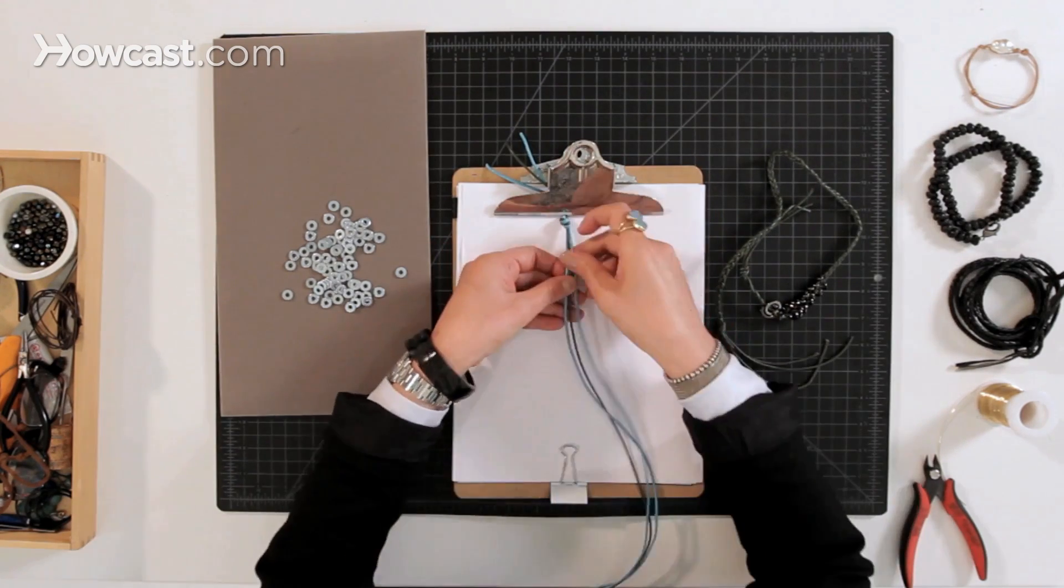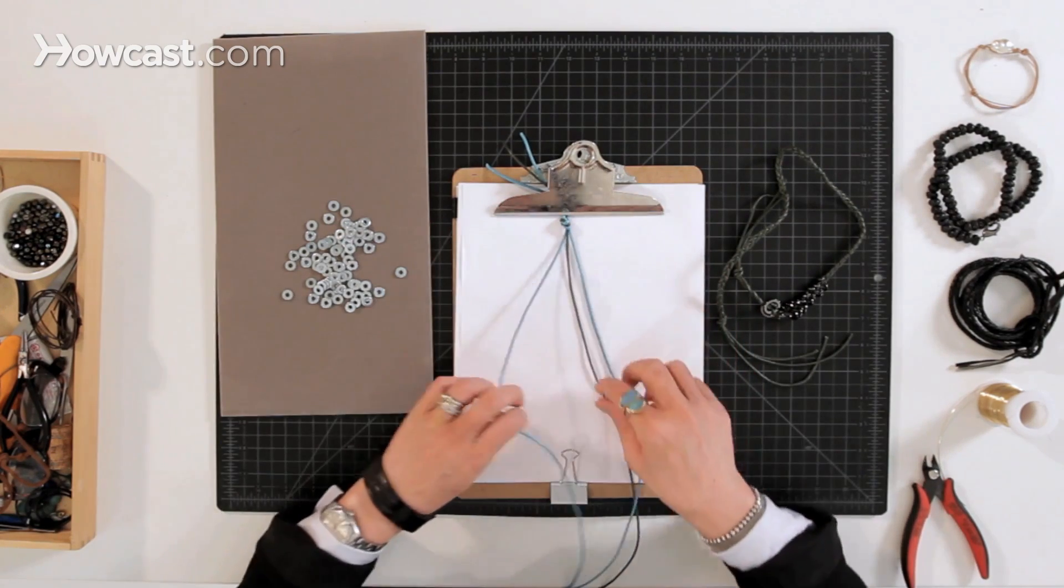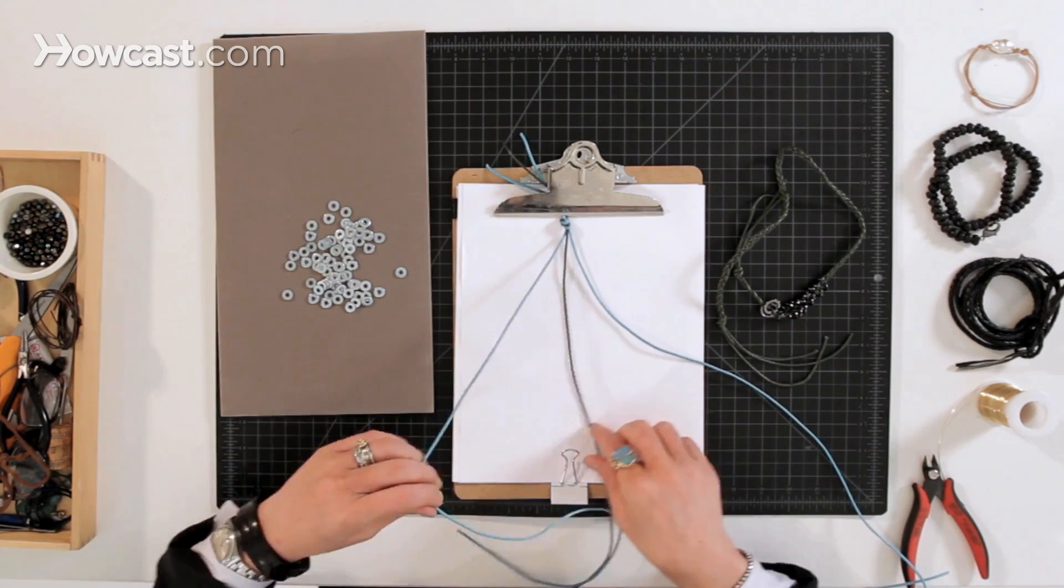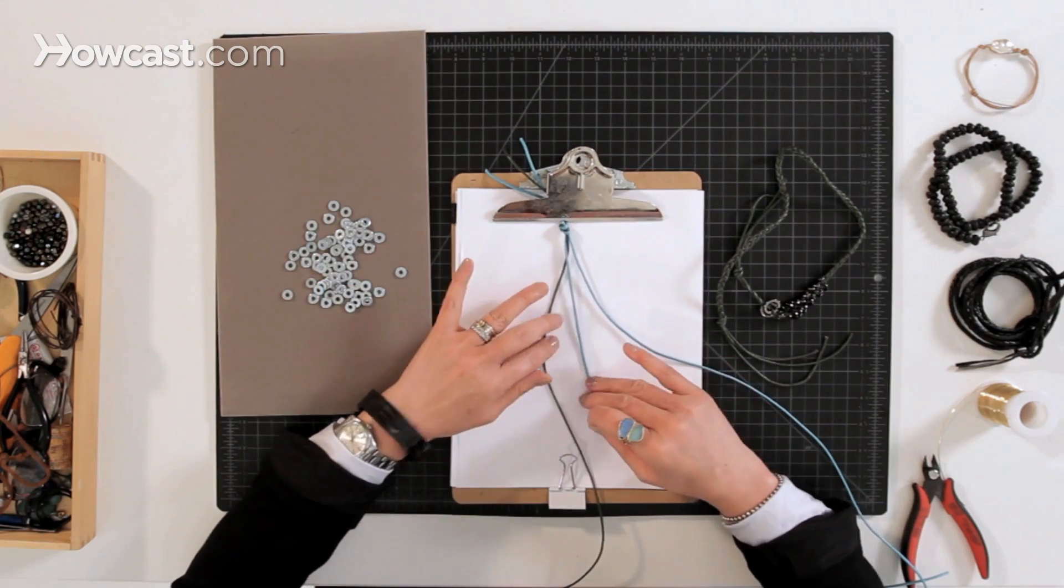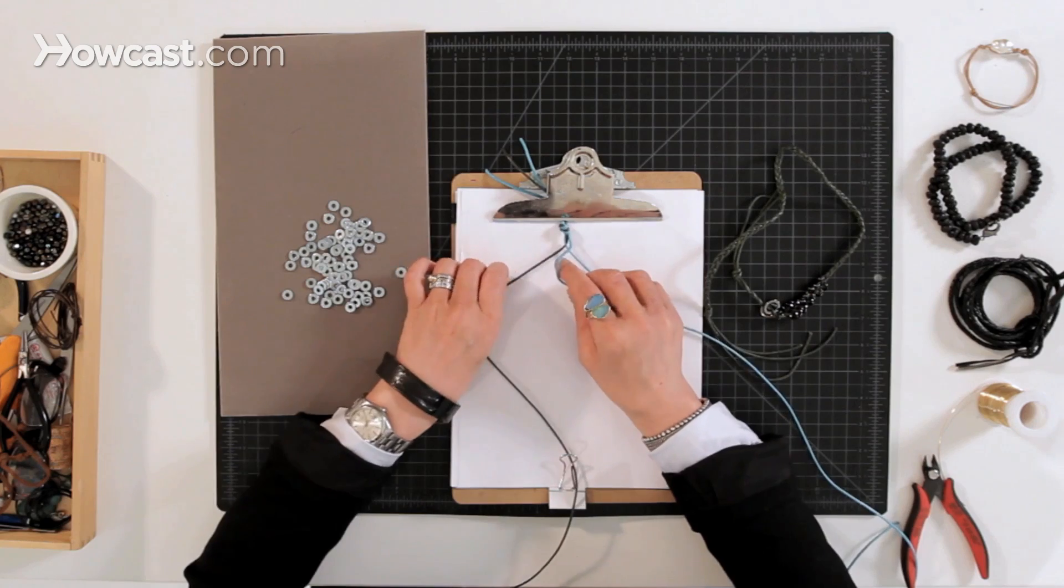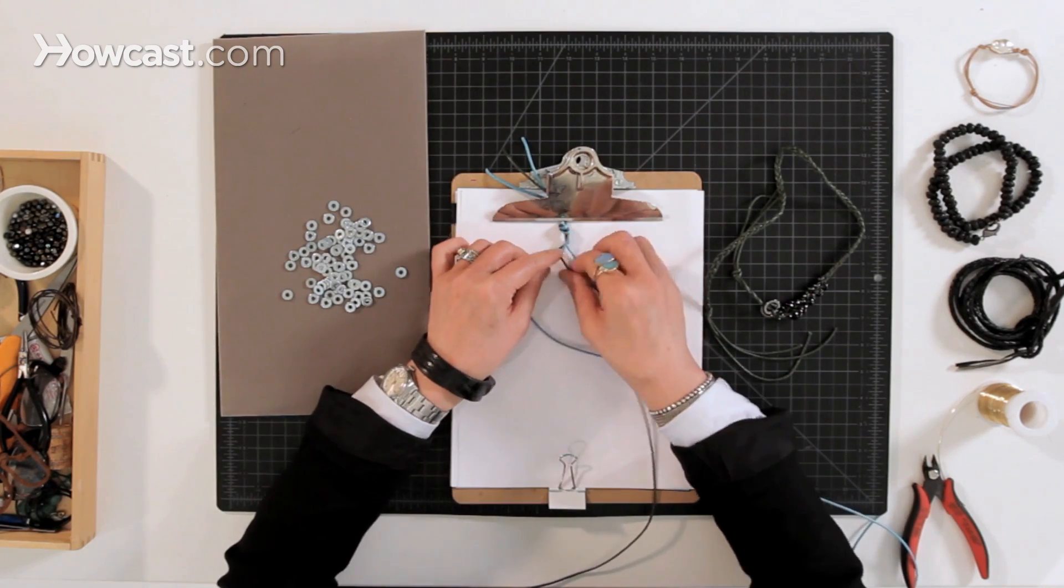So basically this is just like braiding hair, but for those who don't know how to braid hair, you have three strands and you're always going to bring one over. So the left side over to the middle and that becomes the middle and then the right side. So whichever one that you bring to the middle becomes the middle cord and then you just bring each side over.